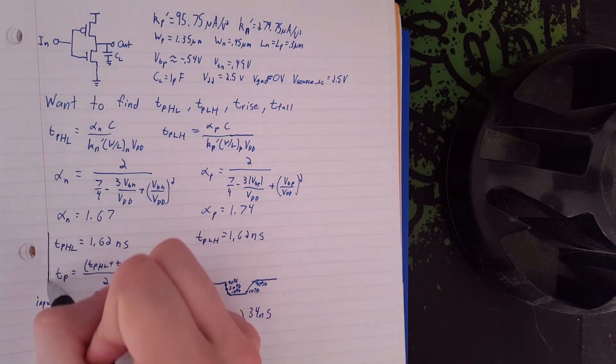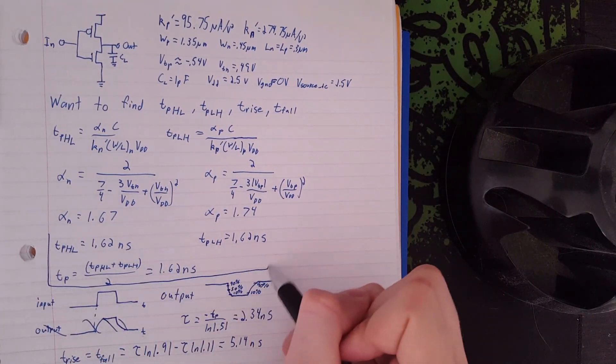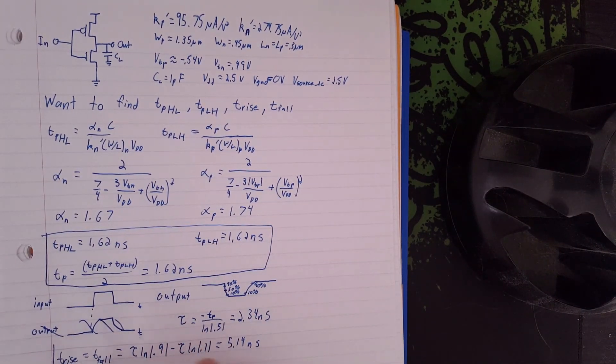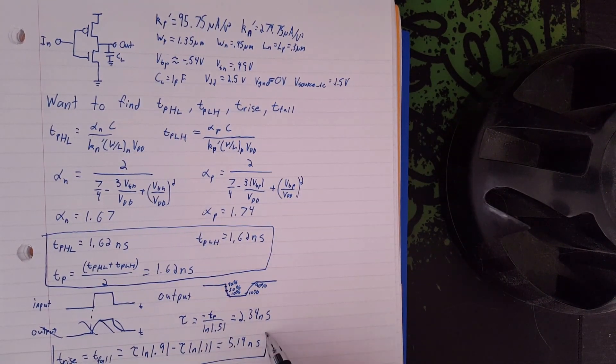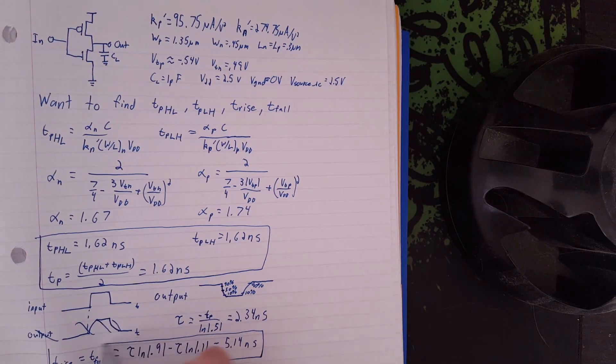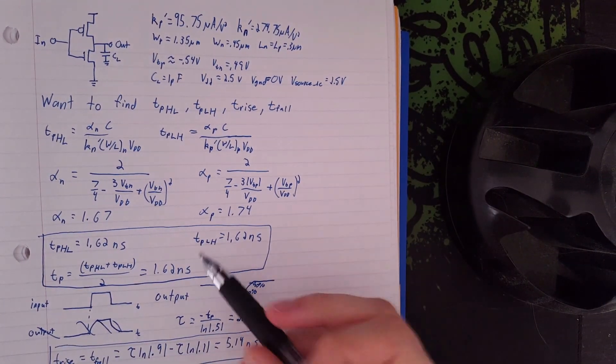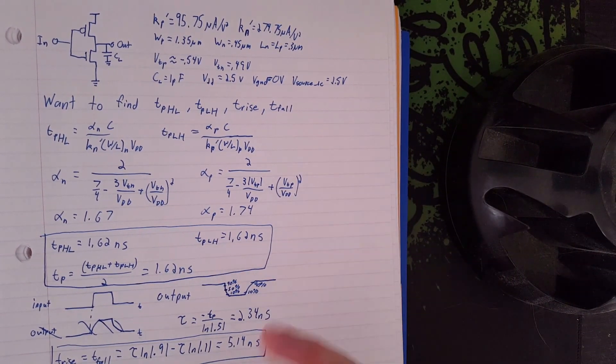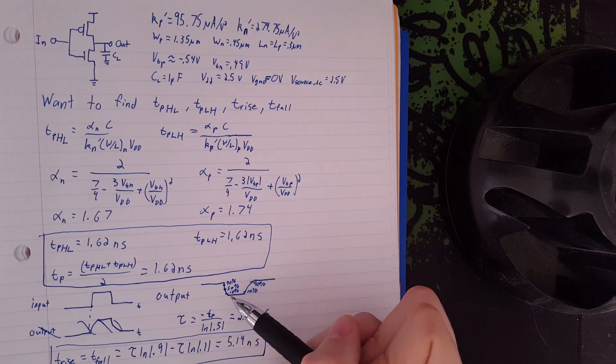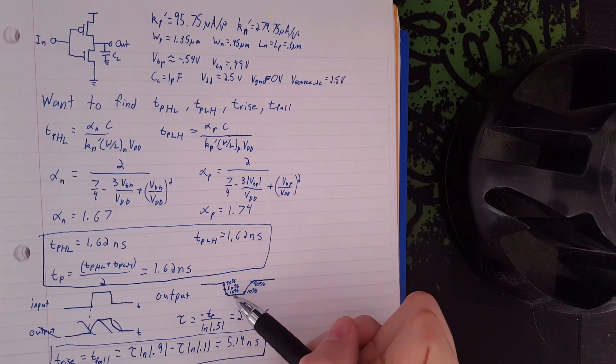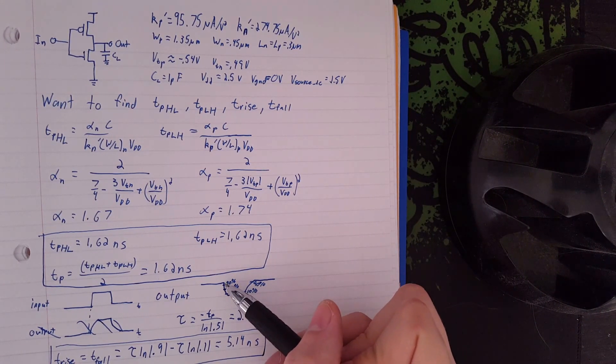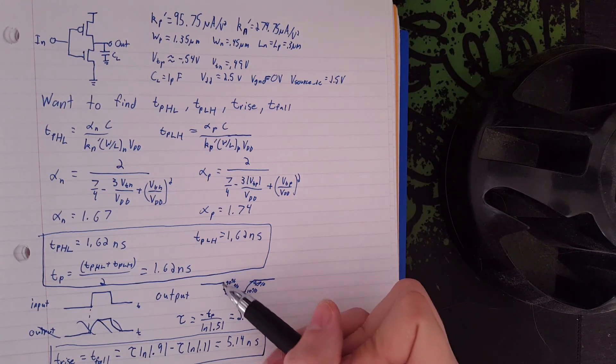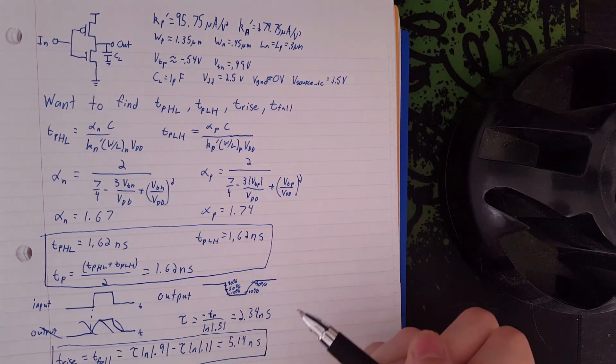So we have our delay times here. And we have our rise and fall times here. As you can see, our rise and fall times are actually quite a bit more than our delay times. And that's because exponential functions are slower and slower the closer they get to their final value. So to go from 90% to 10% actually takes quite a bit longer than just go from 100% to 50%. And the same for the rise time.